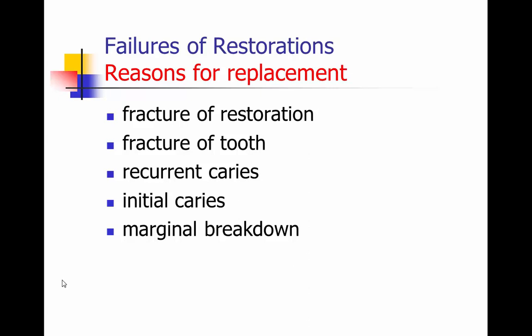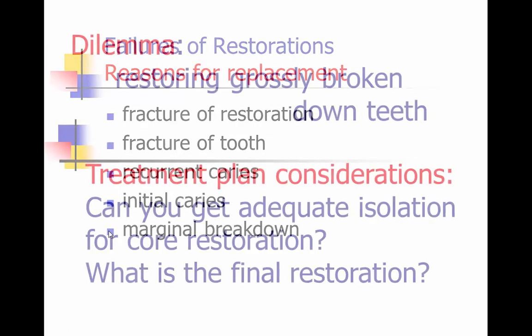So we're replacing restorations — restorations are failing. The cycle of replacement means that once you start placing a restoration in a tooth, over the course of the lifetime of that patient, that restoration will be replaced, and it is very typical through the cycle of restoration replacement that they get bigger and bigger. Typically we're replacing restorations due to fracture of the restoration, fracture of the tooth, sometimes recurrent caries, marginal breakdown, and the restoration needs to be replaced.